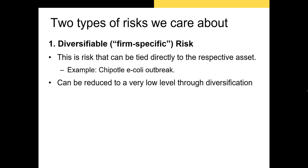We can break risk down into two broad types or categories. The first type is diversifiable or firm-specific risk. Firm-specific risk is risk tied to a specific asset, like a firm's stock. The risk of the firm defaulting on its debt, the risk of the firm's CEO dying, or the risk of an E. coli outbreak at the firm are all firm-specific risks. These risks primarily affect the stock of this firm. When I say that we can reduce risk through diversification, this is the risk I'm talking about more or less eliminating.